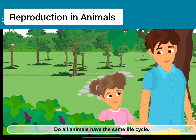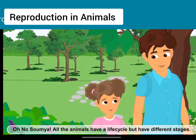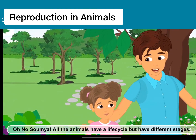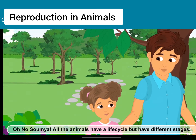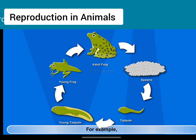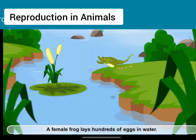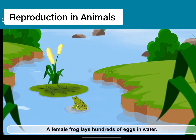Do all animals have the same life cycle? Oh no Soumya. All the animals have a life cycle but have different stages. For example, a frog has a different life cycle and it takes place at a different place also. A female frog lays hundreds of eggs in water.